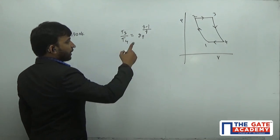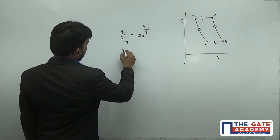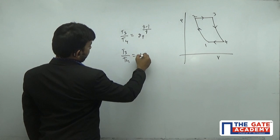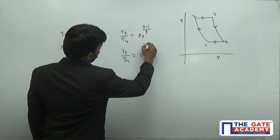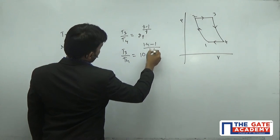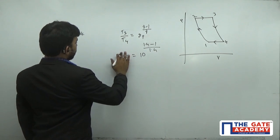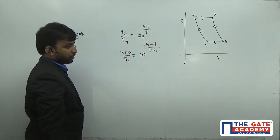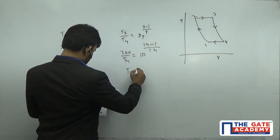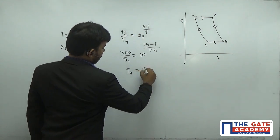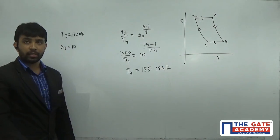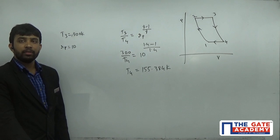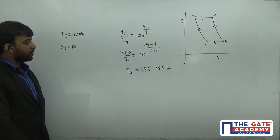He gives the value of gamma as 1.4. So T3 by T4 is 10 power 1.4 minus 1 divided by 1.4. In the question he gave the value of T3 as 300 Kelvin. From here I can get the value of T4. T4 is 155.384 Kelvin. This is the temperature at state 4.